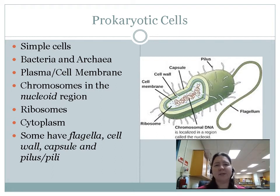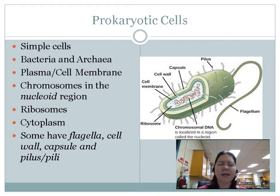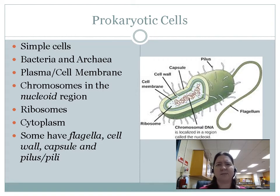Now, prokaryotic cells are bacterial cells that do a lot of invading, and so they can have extra things. They can have a capsule, which is basically just a coating on them. Capsules can actually make them more virulent — virulent means dangerous — and can make them more dangerous to us because our defense mechanisms, our stomach acid, and our immune system cells can actually attack them.